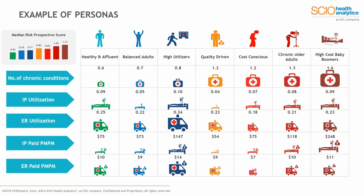For example, the high-cost baby boomers in the far right corner — that particular metric, number of chronic conditions, is both very high in risk score and high in actual chronic conditions. So if that's a segment you need to focus on, now you know their risk score and chronic conditions. By looking at this table you can identify both the predominant risk scores and the utilization or cost associated with each persona type. Typically we provide a single scorecard or risk value per persona type, but we do have the ability to provide much more granular data based on the client's needs.